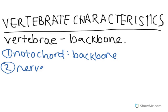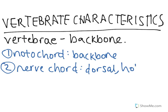The second vertebrate characteristic would be a nerve cord. In humans, this is the brain and spinal cord, and usually this nerve cord is found within the fetus — it starts developing then.